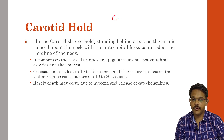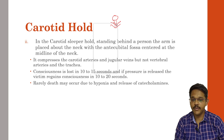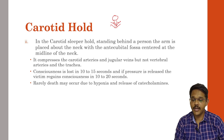In the carotid sleeper hold, the officer stands behind the person and the arm is placed in front of the neck, with the antecubital fossa centered in the middle of the neck. The pressure is on the sides of the neck, near the carotid and jugular vessels. The arm and forearm press the lateral regions of the neck — compared to the choke hold where pressure is in the midline. In the carotid hold, pressure compresses the carotid arteries and jugular veins but not the vertebral arteries. Consciousness is lost in 10 to 15 seconds and if pressure is released the victim may become conscious again within 20 seconds. Rarely, death may occur due to hypoxia or release of catecholamines.